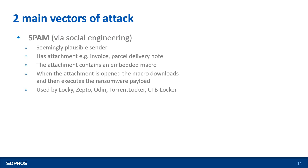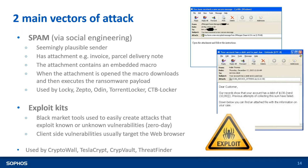This method is used by Locky, Zepto, Odin, TorrentLocker, and CryptoLocker. The other vector is exploit kits. You don't need to be an expert to carry out a ransomware attack — exploits are available as a service (EaaS). You can use the utility, exploit vulnerabilities in browsers or Windows, and get the money. This is used by CryptoVault, TeslaCrypt, and ThreadPand, which use exploit kits to execute their attacks.